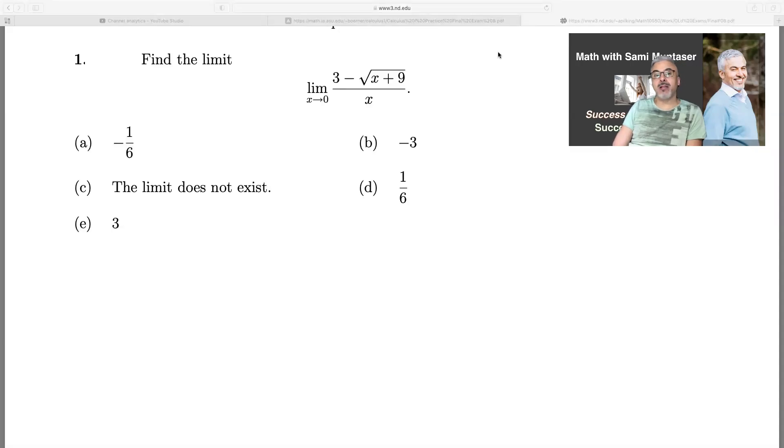Hi again, this is Sammy. We will do some first year calculus. So here the first question, find the limit as x goes to zero, three minus the root of x plus nine all over x. You see you cannot sub the zero here because if you divide by zero it's undefined. So what you're going to do here, you want to multiply by the conjugate and see what you get.